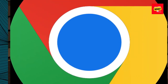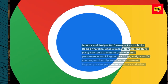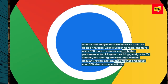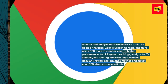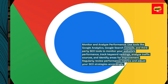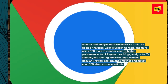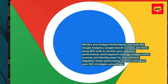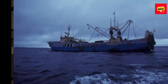Monitor and analyze performance. Use tools like Google Analytics, Google Search Console, and third-party SEO tools to monitor your website's performance, track keyword rankings, analyze traffic sources, and identify areas for improvement. Regularly review performance metrics and adjust your SEO strategies accordingly.